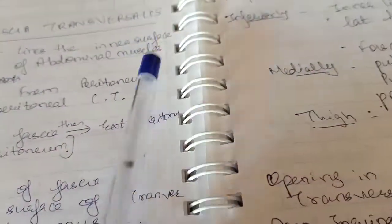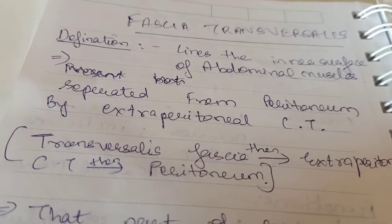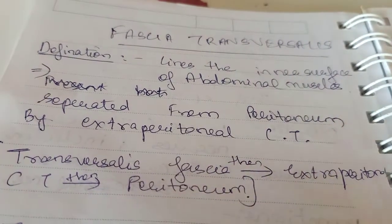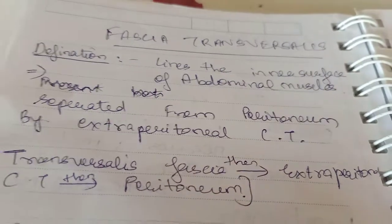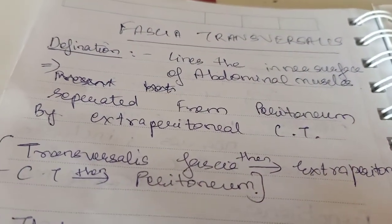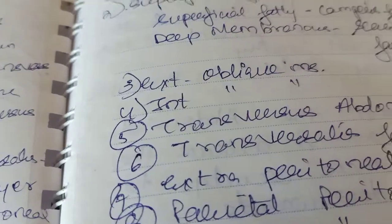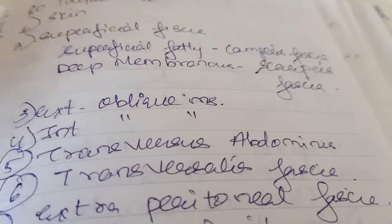By definition, the transversalis fascia lines the inner surface of the abdominal muscles. The layers are: skin, superficial fascia, then external oblique, internal oblique, transversus abdominis, and then the fascia. So this fascia is lining the inner surface of all the abdominal wall muscles.